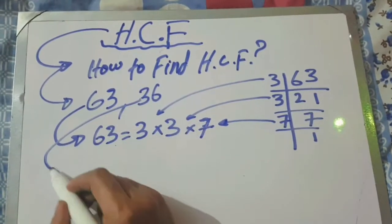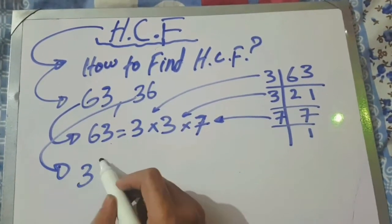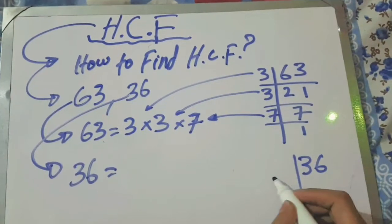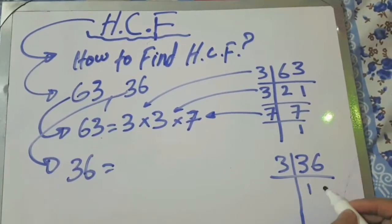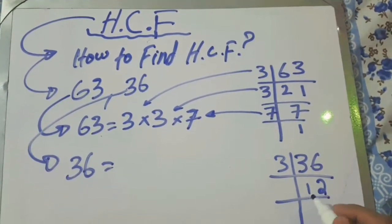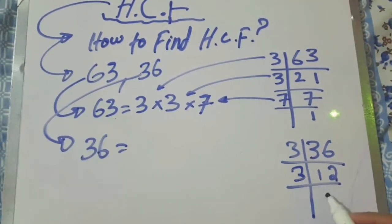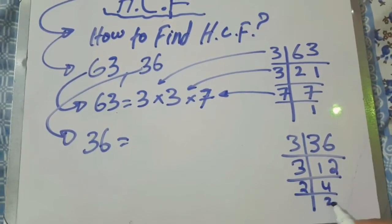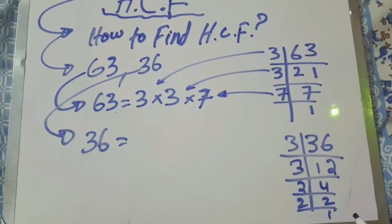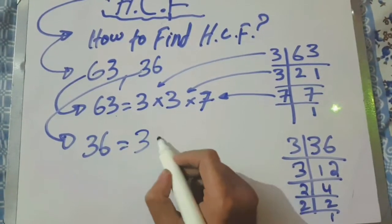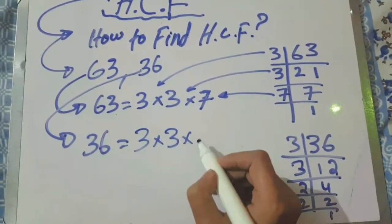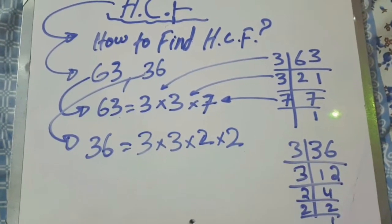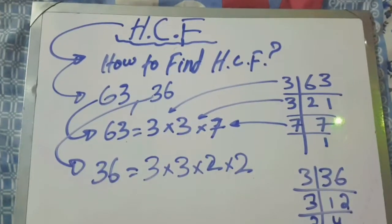Now we have 36. We will make the factors of 36. First take 3 as a divisor: 3 ones are 3, 3 twos are 6, 3 fours are 12, 2 twos are 4, and 2 ones are 2. Here we have the factors of 36: 3 multiplied by 3 multiplied by 2 multiplied by 2.